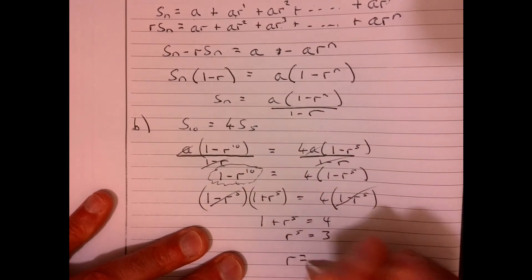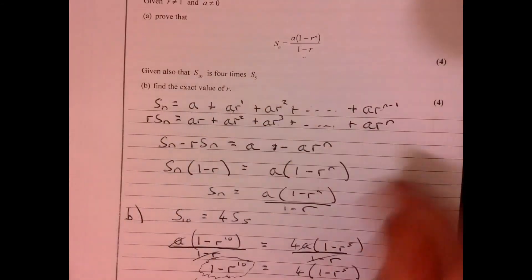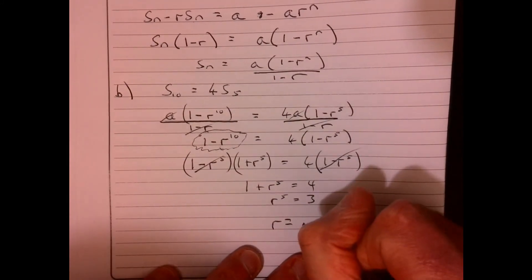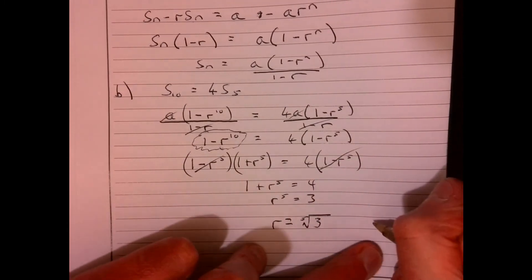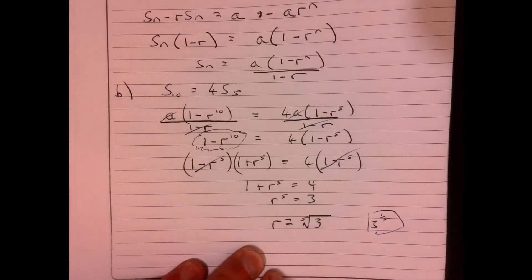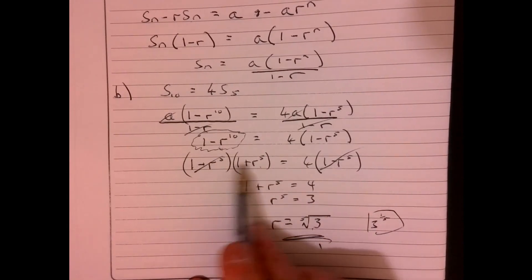So r, now it does say give the exact value, just up there, so give the exact value. So, in other words, we don't actually need to work it out, because it's just the fifth root of 3. Or if you prefer, you could write it as 3 to the power of one fifth. Okay? That was the key, wasn't it? Just there.